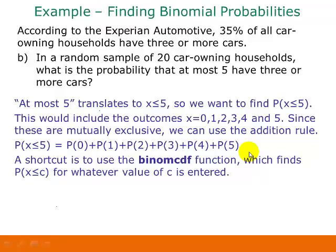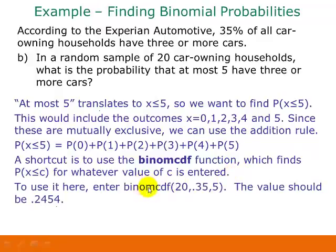There's a shortcut: the binomCDF function on your calculator, where C stands for cumulative. This calculates the probability for X less than or equal to whatever value you enter. Since we need P(X ≤ 5), we enter 5. Using binomCDF with N = 20, P = 0.35, and X = 5, the value you get should be 0.2454 rounded to four decimal places. Test this out and make sure you can get this value.